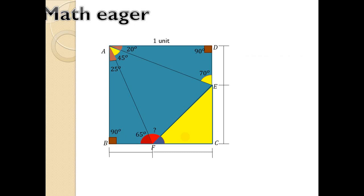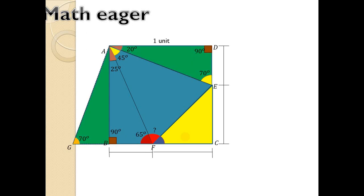For this, extend B to Z. Extend B to Z. And if we join AZ, then angle AZB must be 70 degrees. This is the construction part, which is possible. Then take these two triangles: AZB and AEZ. This angle and this angle are equal, and both right angles are 90°. And these sides are also equal because they are sides of the square. So the AAS axiom is satisfied, meaning these two triangles are congruent.